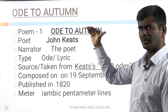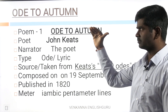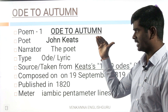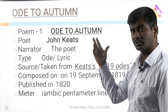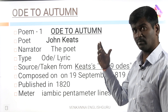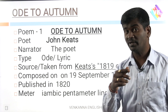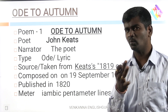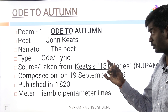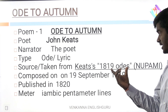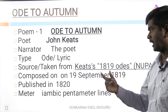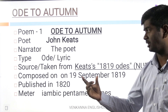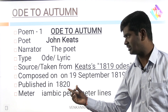The title of the poem is Ode to Autumn. The poet is John Keats, narrated by the poet himself. Type: it's an example for an Ode, it's an example for a lyric. You should also know whether it is an example for a regular ode, irregular ode, or a Pindaric ode — very, very important. It's taken from Keats's 1819 Odes, composed on 19 September 1819, and published in 1820.